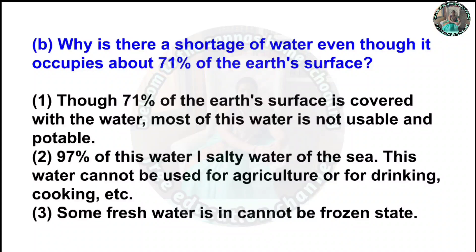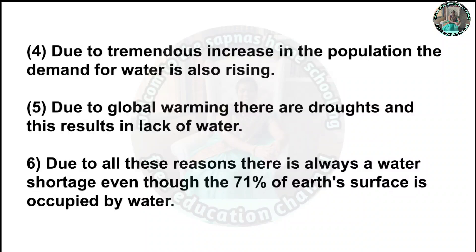B) Why is there a shortage of water even though it occupies about 70% of the earth's surface? Although the earth is covered with water, most of this water is not usable or potable. 97% of this water is the salty water of the sea, which cannot be used for agriculture or drinking. Some fresh water is in a frozen state. Due to the tremendous increase in population, the demand for water is rising. Due to global warming, there are droughts, resulting in a lack of water. Due to all these reasons, there is always a water shortage even though 70% of earth's surface is occupied by water.